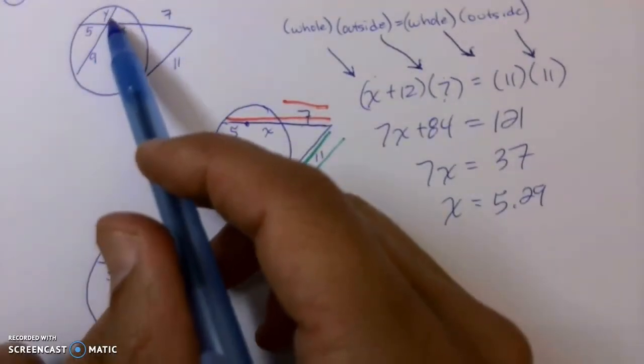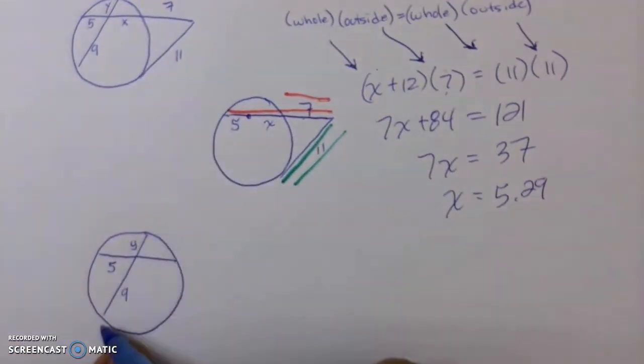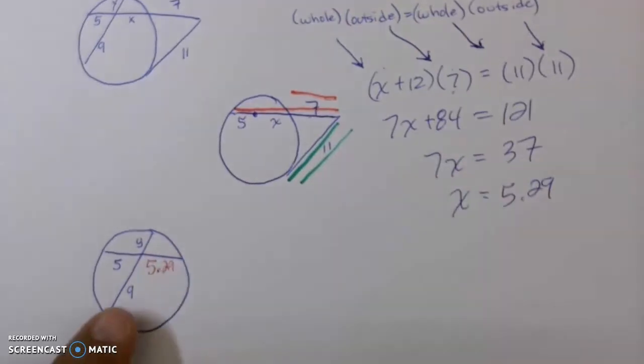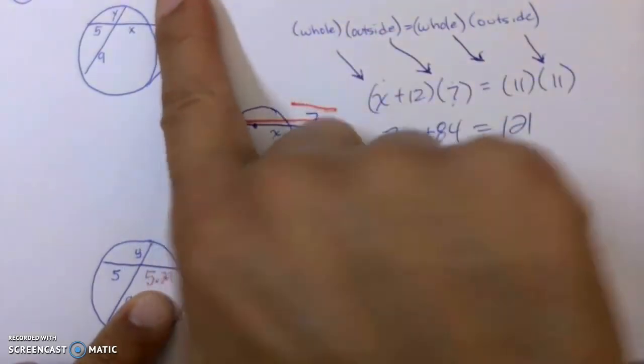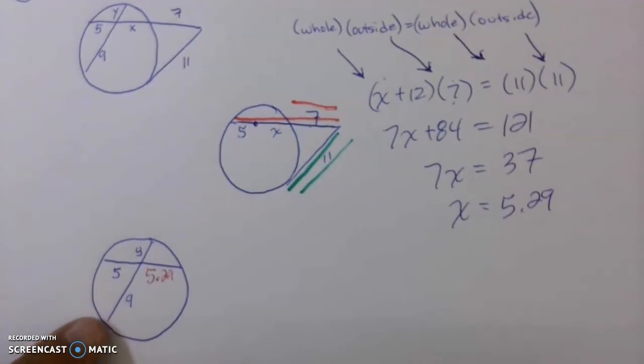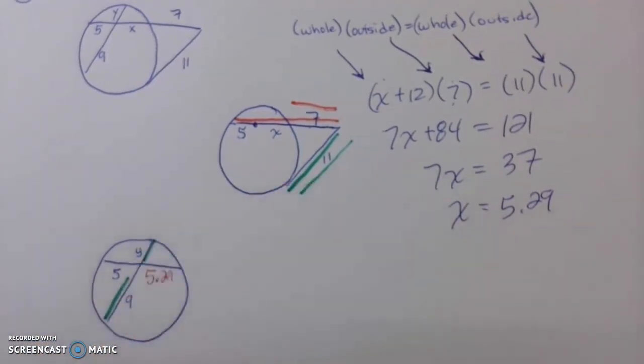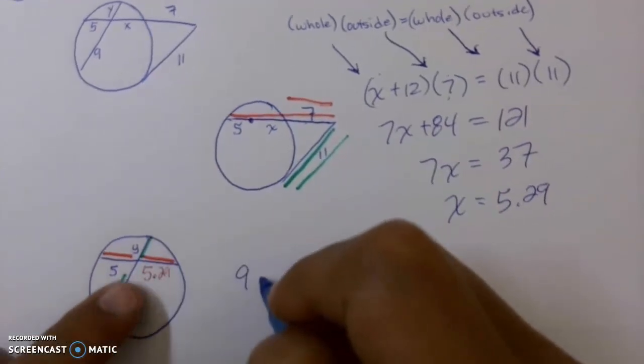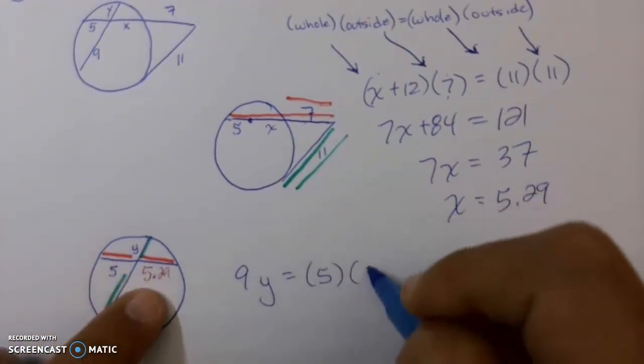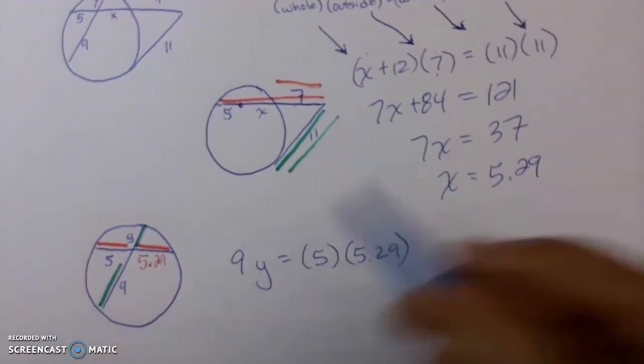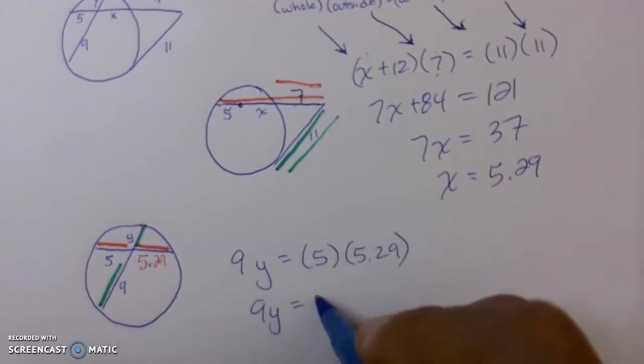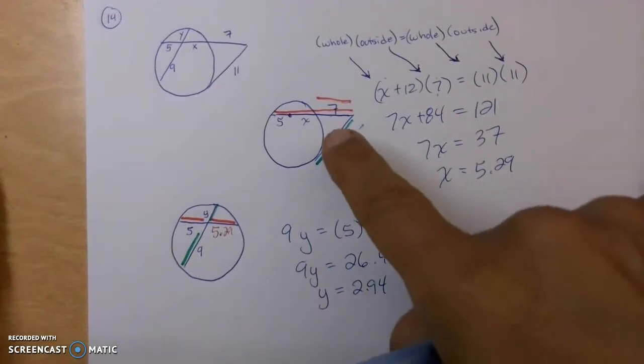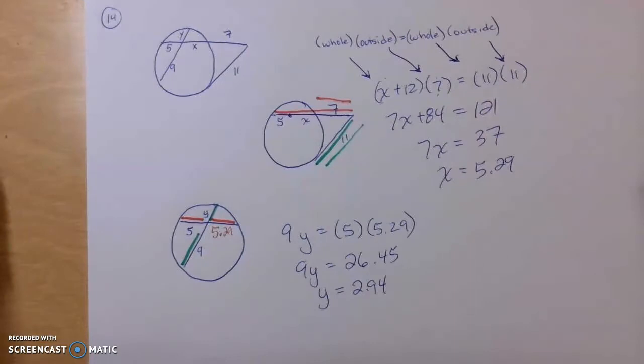Now that 5.29 you're going to need to help solve for Y here. Notice Y is inside the circle and you're going to need this line here and this segment here. This is where X is and so I'm going to use this number here, 5.29 that we collected from solving for X here. Now I got rid of these outside lines because I didn't want any other distractions. These are inside with inside. So I would simply say green times green is equal to red times red. When you have segments inside, you just say green times green is equal to red, 5 times red, 5.29. And then you would solve this one here. This is 9Y. This is 26.45 divided by 9. Y is approximately 2.94. Notice I solved one to help solve the other. I kind of eliminated all the other distractions when I did number 14.